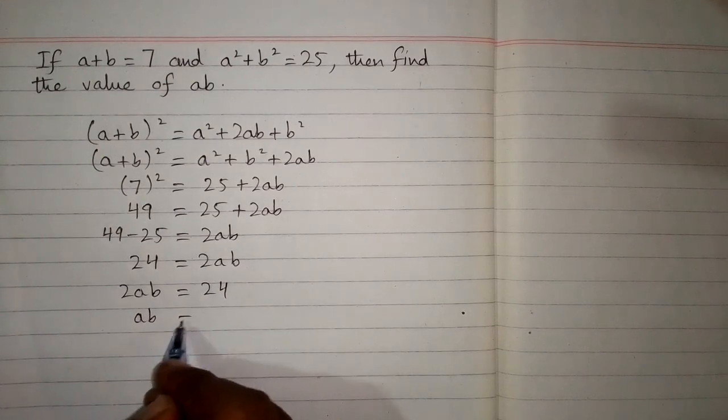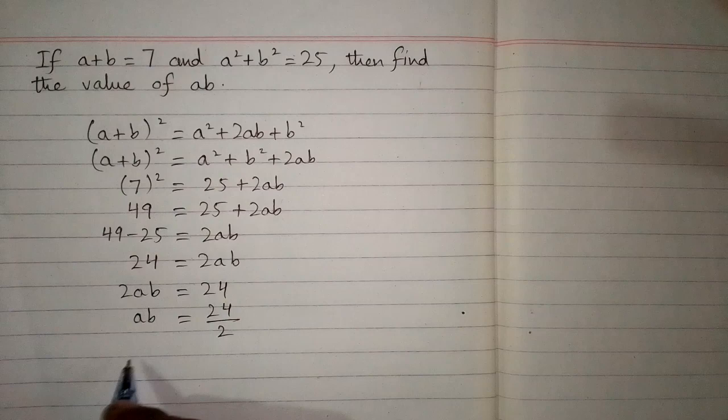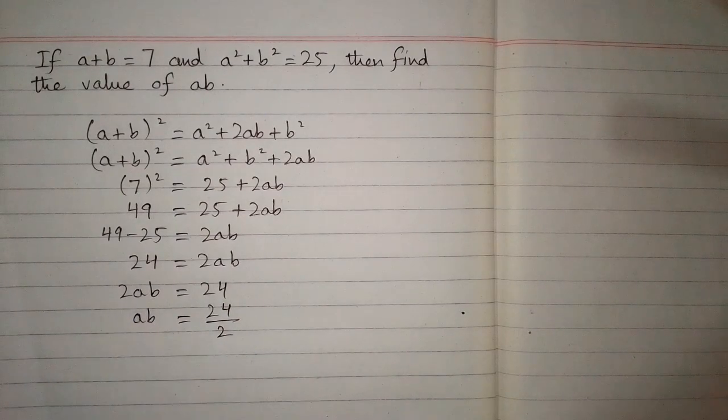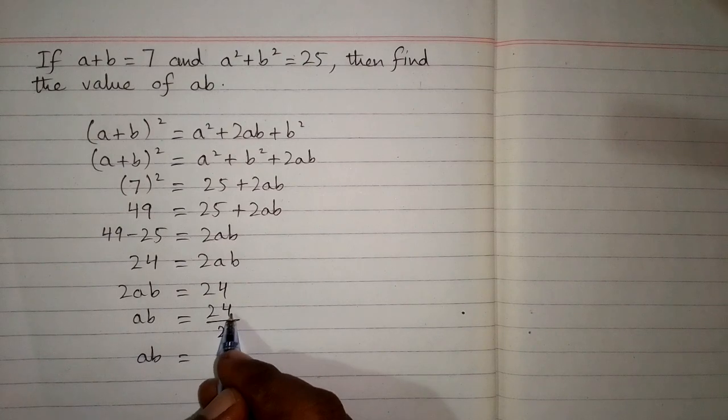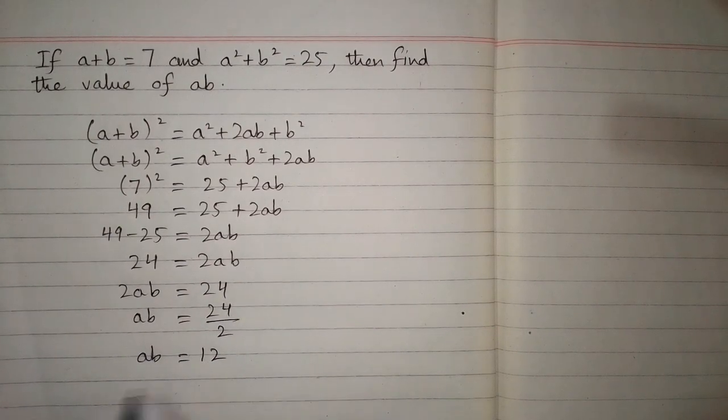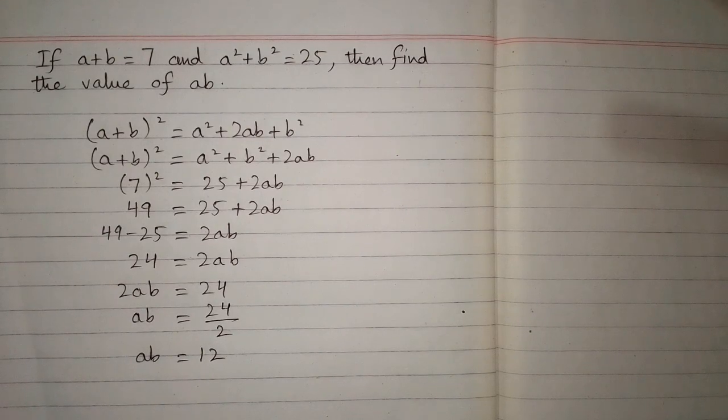And then we take this 2 on this side of equation, so we have to divide 24 by 2 because 2 is multiplying on this side. Now the value of ab is equal to 24 ÷ 2, which is 12. So we have ab = 12, and this is the required answer.